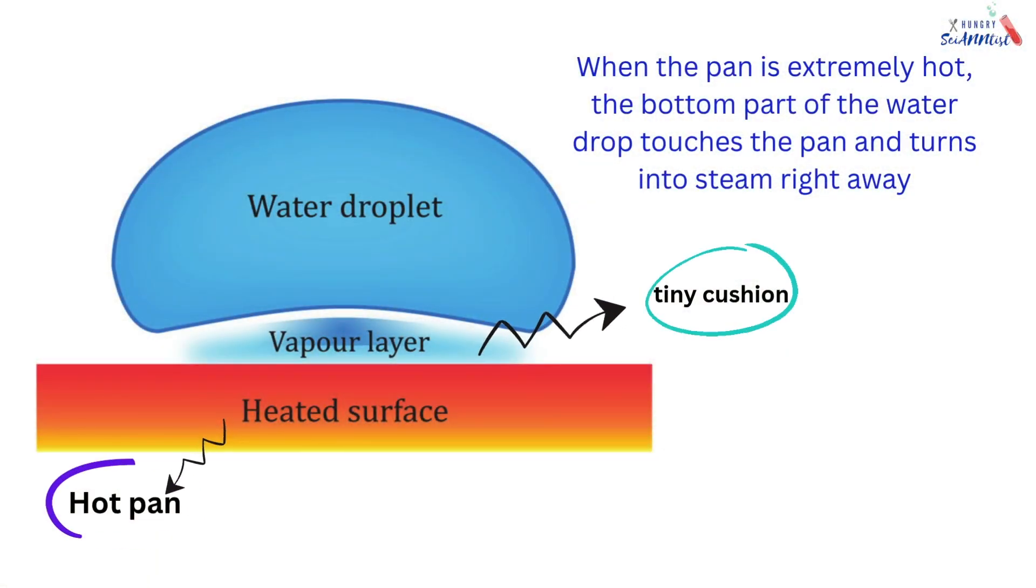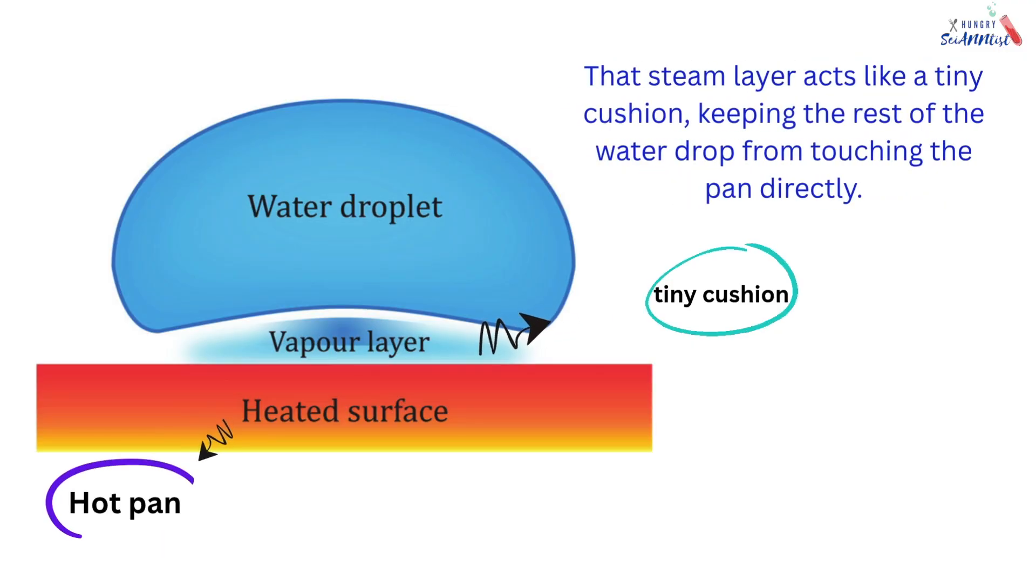When the pan is extremely hot, the bottom part of the water drop touches the pan and turns into steam right away. That steam layer acts like a tiny cushion, keeping the rest of the water drop from touching the pan directly.